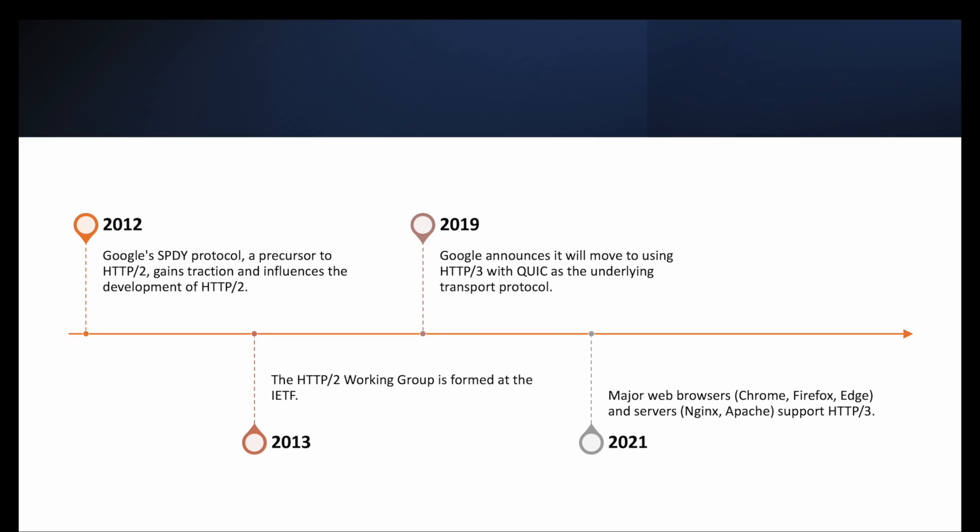In the journey to HTTP 2.0, a significant milestone was in 2012 when Google released the SPDY protocol, which influenced the HTTP 2.0 we see today. In 2013, the IETF formed an HTTP 2.0 working group. After HTTP 2.0 was released in 2015, in 2019 Google announced they were moving away from TCP toward the QUIC protocol using HTTP 3.0. In one of my videos I gave a hint about the limitations of TCP and why we need to move away from it given the growth of the internet.